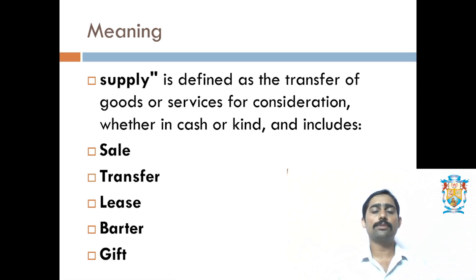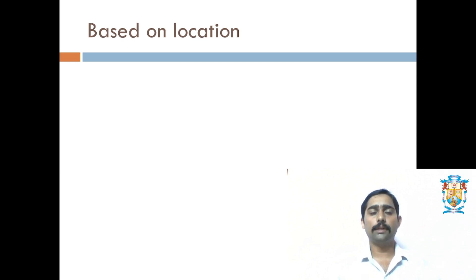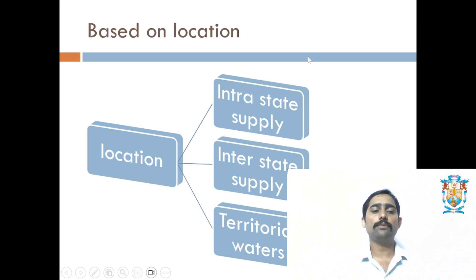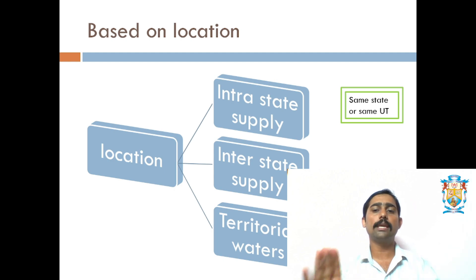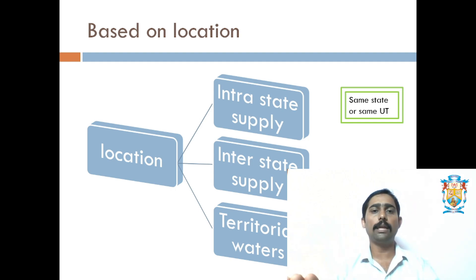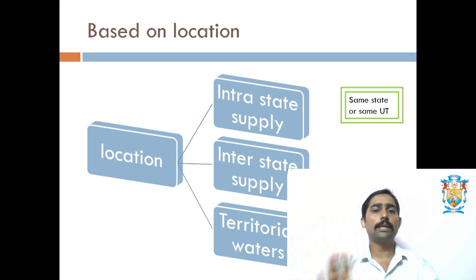We are going to study different types of supplies. Supplies are categorized under various categories. First, based on location, we have three types. The first is intrastate supply, where supply takes place within the same state or within the same union territory. For example, a sale between Mangaluru and Bengaluru is within one state, so that is intrastate.